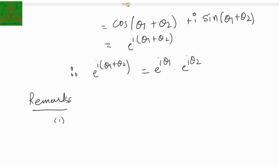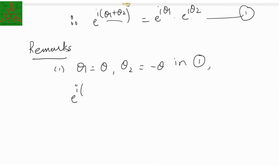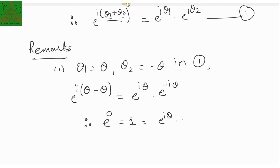First remark: if I take θ₁ equal to θ and θ₂ equal to minus θ in equation 1, then e raised to i(θ − θ) will have e raised to iθ into e raised to minus iθ. That gives you e raised to 0, which is 1, equal to e raised to iθ into e raised to minus iθ. Therefore, e raised to minus iθ equals 1 upon e raised to iθ.